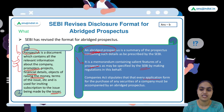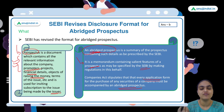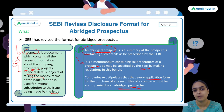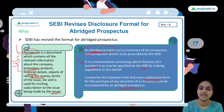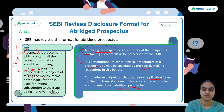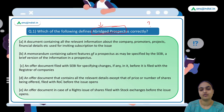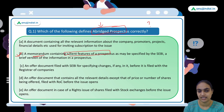The Companies Act stipulates that every application form for purchasing securities must be accompanied by an abridged prospectus. When a company wants to raise money by issuing securities, the application form investors fill must have the abridged prospectus attached, so investors can review it before subscribing. The correct answer is option B, which states it is a memorandum containing the salient features of the prospectus.